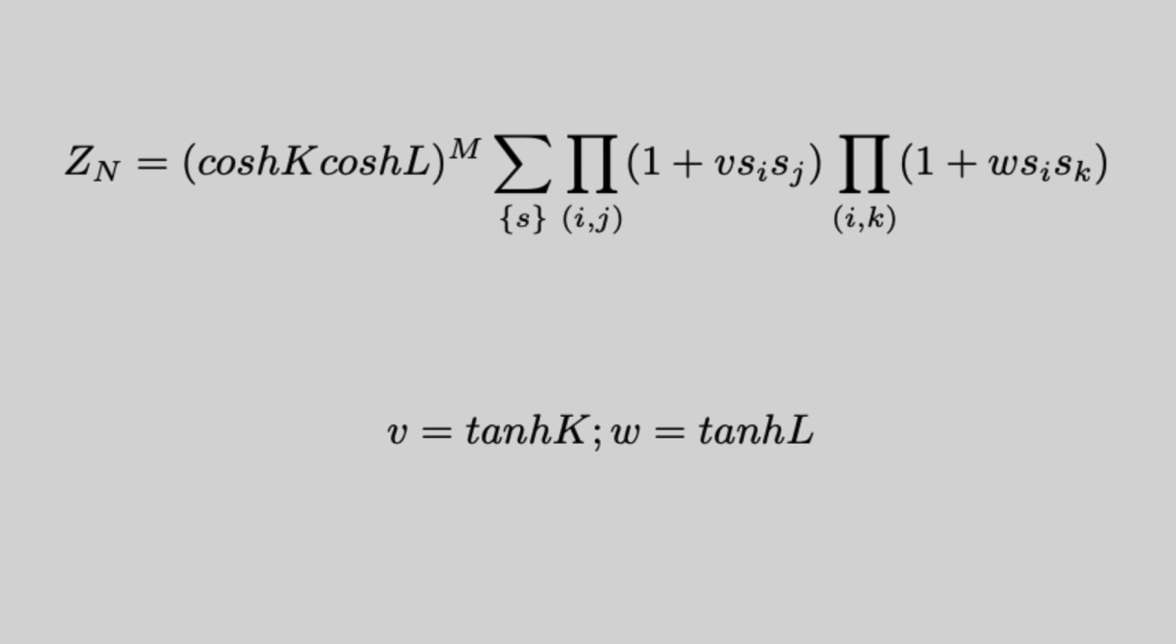Here is where a graphical approach comes in handy. So if we turn our attention to the first product, these are looking at all the horizontal links between neighboring sites. So it's every possible horizontal line between two points on our 2D Ising model lattice.